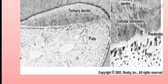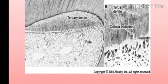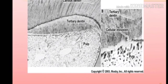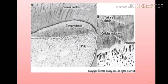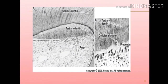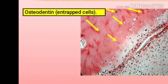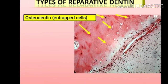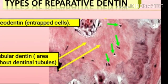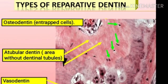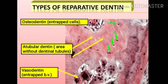Figure A shows the carious dentine, the tertiary dentine, and the innermost pulp. Figure B shows the tertiary dentine, cellular inclusions, pre-dentine, and the pulp. The next figure shows the types of reparative dentine: osteodentine with entrapped cells, atubular dentine — an area without dentinal tubules — and vasodentine with entrapped blood vessels.